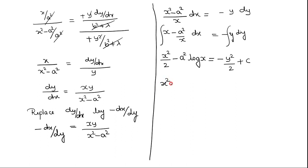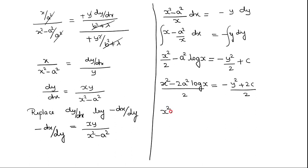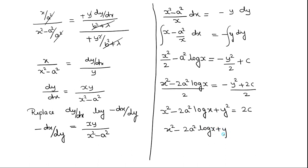Rewriting with simplification, taking 2 as LCM: x² − 2a² log x = −y² + 2C. Taking terms to the left side and cancelling 2 on both sides, we get y² = 2C, or we can write 2a² log x + y² = C′, where C′ = 2C. This is the orthogonal trajectory.